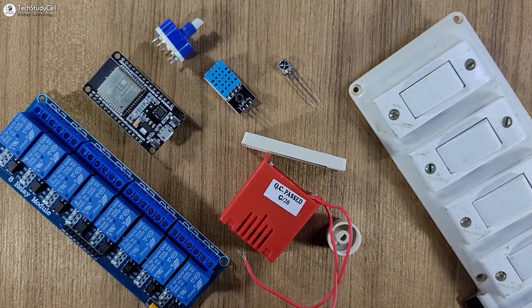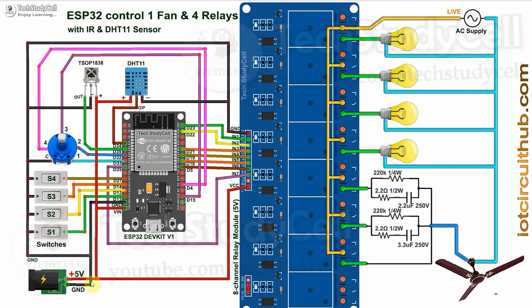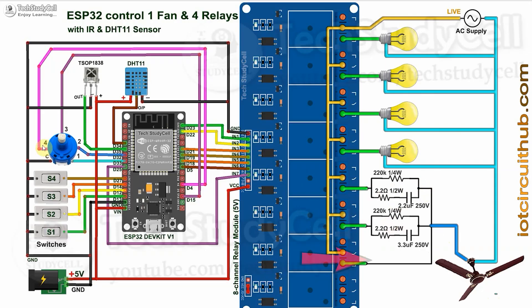We have to connect all these components as per this circuit diagram. In the circuit, I have given a 5-volt supply to the ESP32, relay module, and the sensors. With the first four relays, we are controlling four lamps. Then with the fifth, sixth, and seventh relay, we are controlling the speed of the fan. This is the four-step regulator connected with the ESP32. If we select step 1, the fifth relay turns on and current flows through that path. For step 2, the sixth relay turns on. For step 3, both the fifth and sixth relays turn on together. For step 4, the seventh relay turns on and there is no resistance in the path, so the fan rotates at full speed.